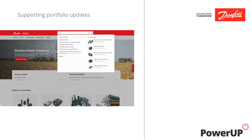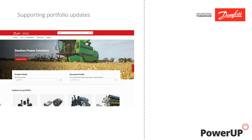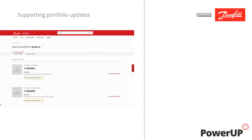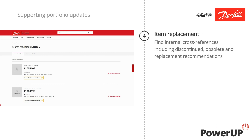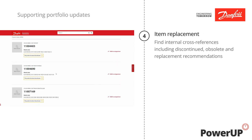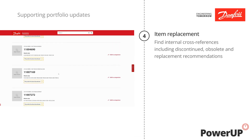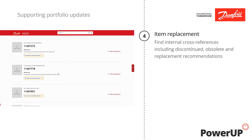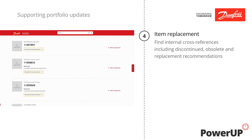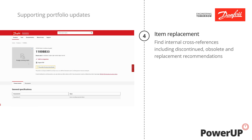We've made noteworthy capabilities available within our global search that will evolve with us. Find updated part numbers, including the ability to search for discontinued part numbers, previous product cross-references for obsolete or old part numbers, and item replacement recommendations.